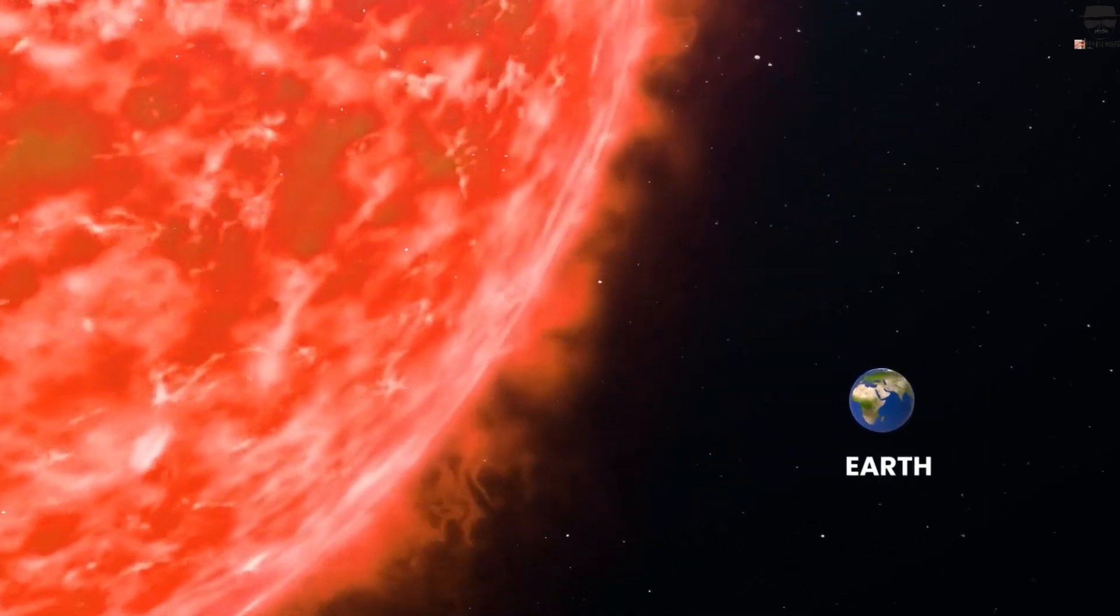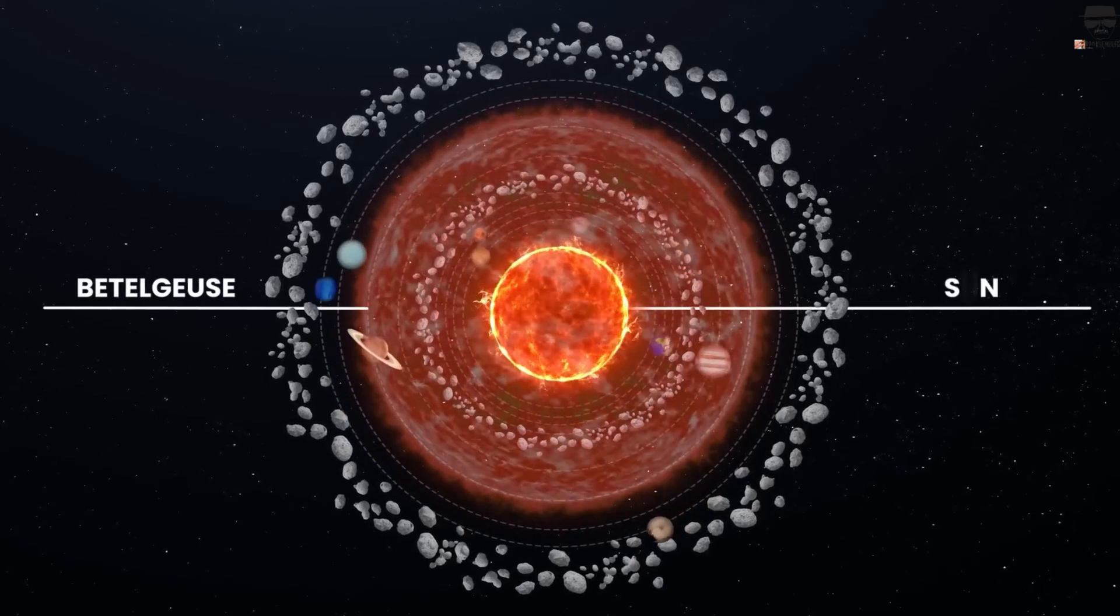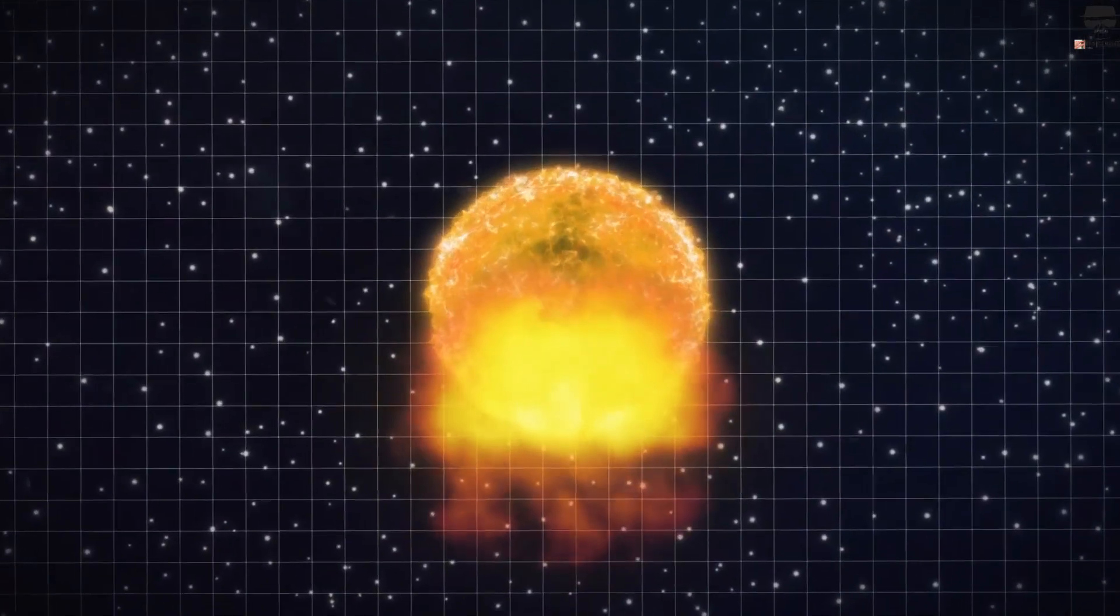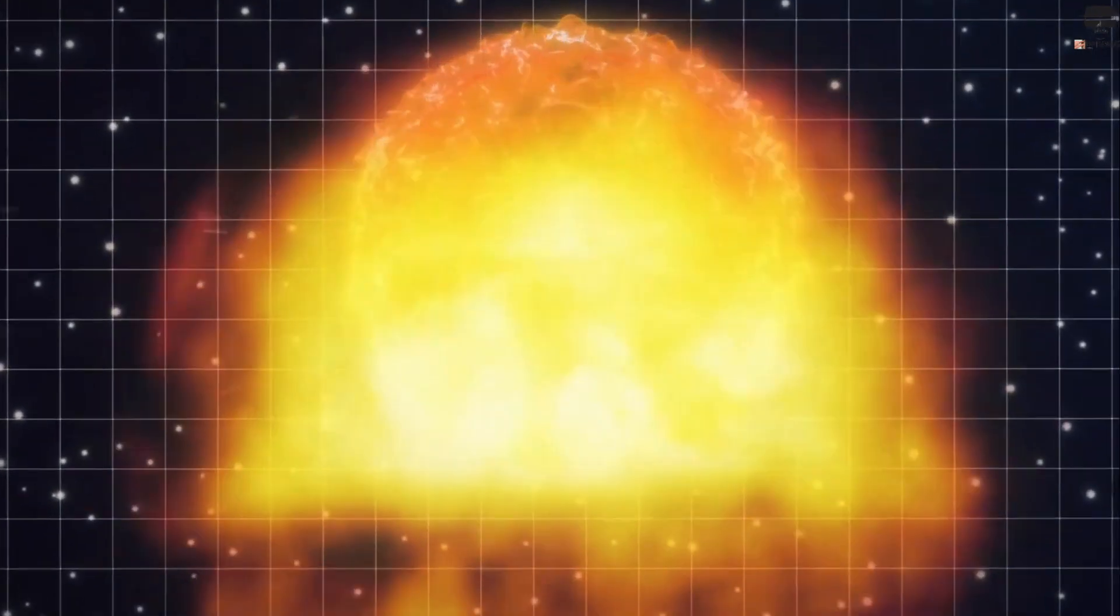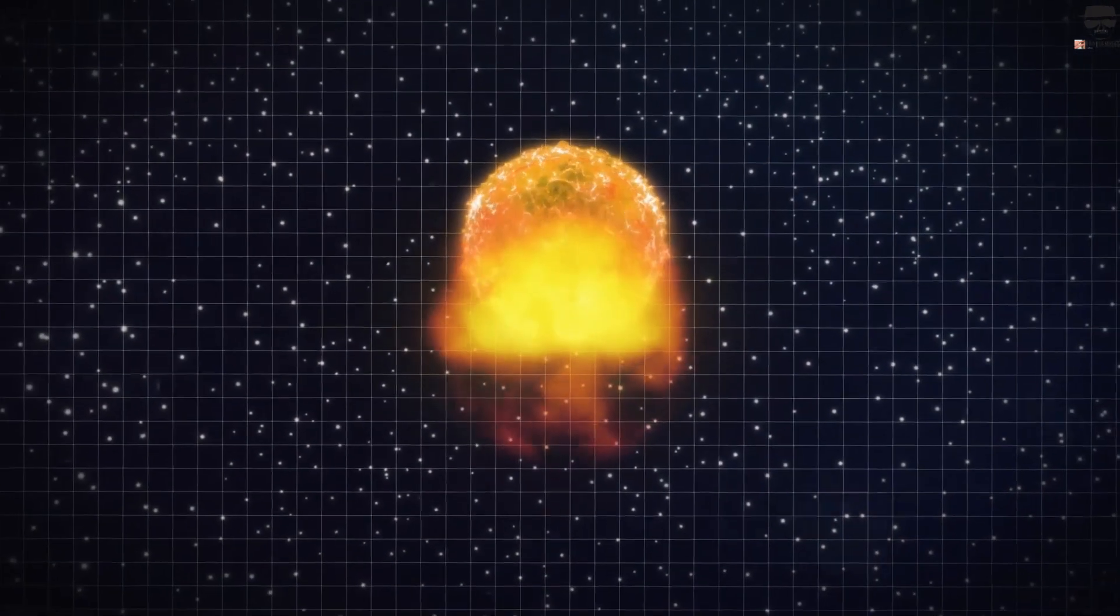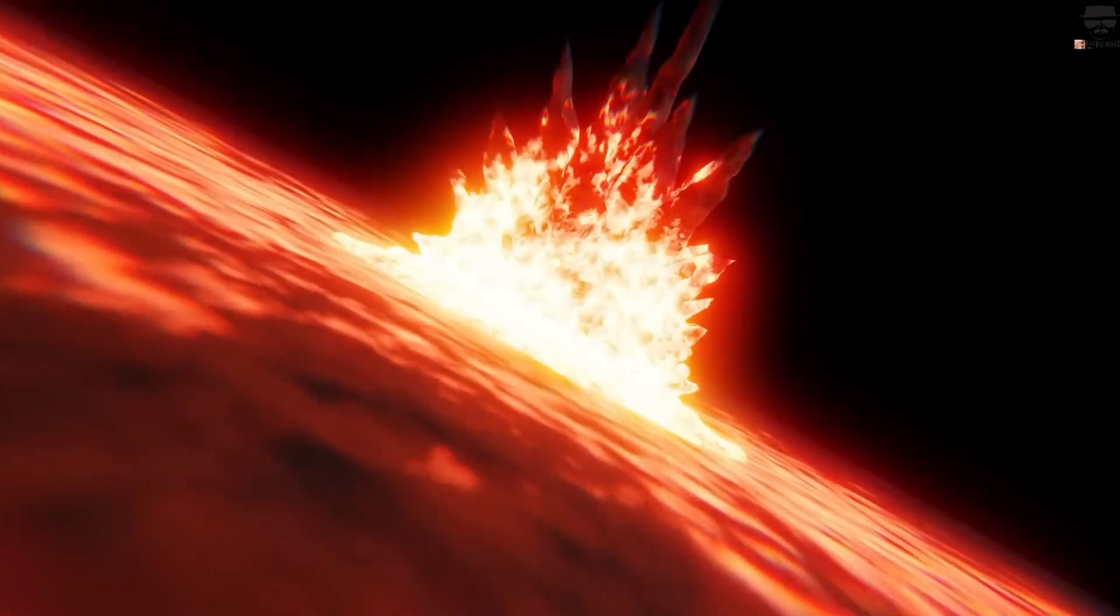If you were to replace our Sun with Betelgeuse, it would engulf Mercury, Venus, Earth, Mars, the asteroid belt, and even Jupiter. But there are also enormous, extended emissions around Betelgeuse from material that's been blown off over the past few dozen millennia. Matter and gas that extends out farther than Neptune's orbit around our Sun.